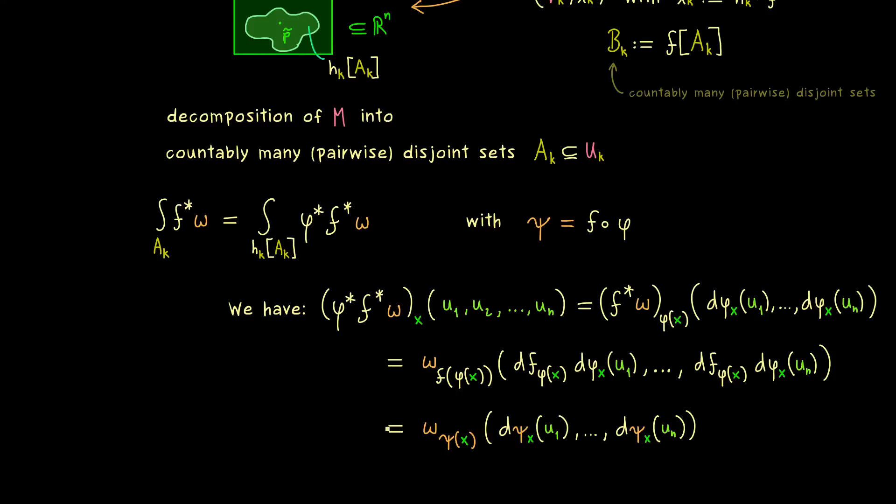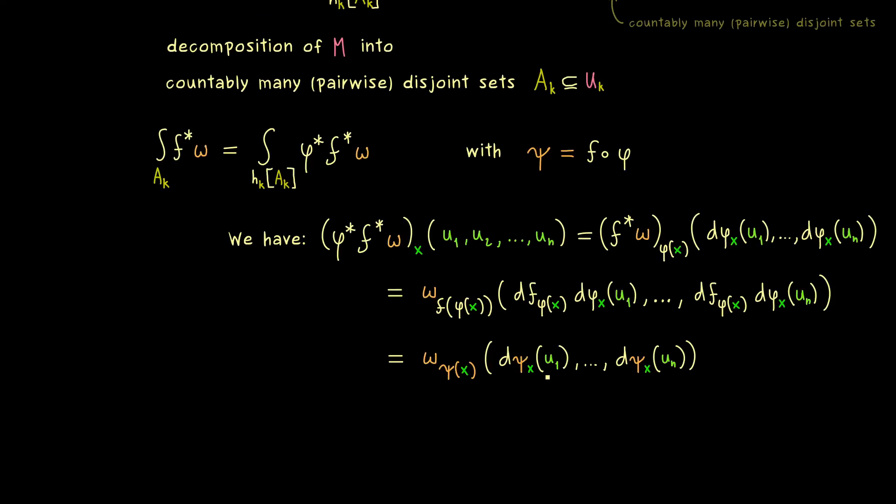And now we should recognize that this is exactly the pullback formula just for the map psi. Therefore we have psi star omega here. It's evaluated at the point x and the vectors u1 to un are put in. So you see we have a really nice short formula here you should definitely remember.